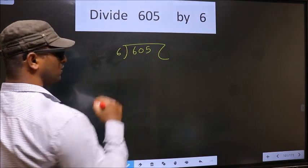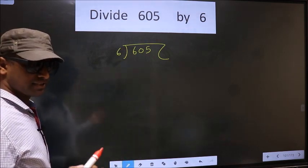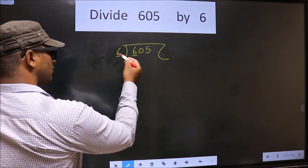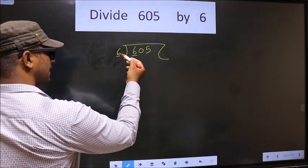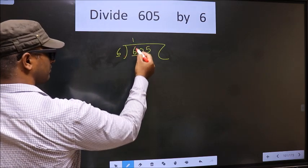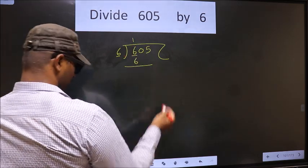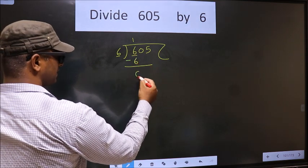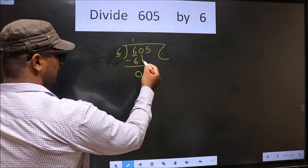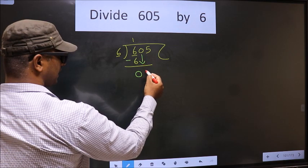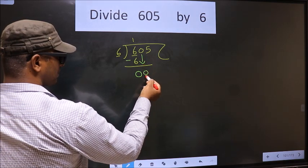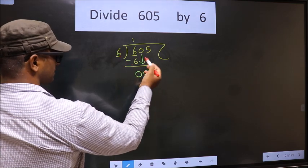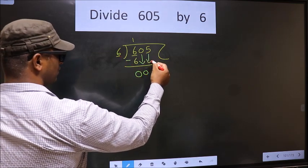divided by 6 here. Now, we have 6 here, also 6. When do we get 6 in the 6 table? 6 once is 6. Now you subtract 6 minus 6 equals 0. Now you bring down the beside number, that is 0. So here 0, here 6. 0 is smaller than 6, so we should bring the other number also down.